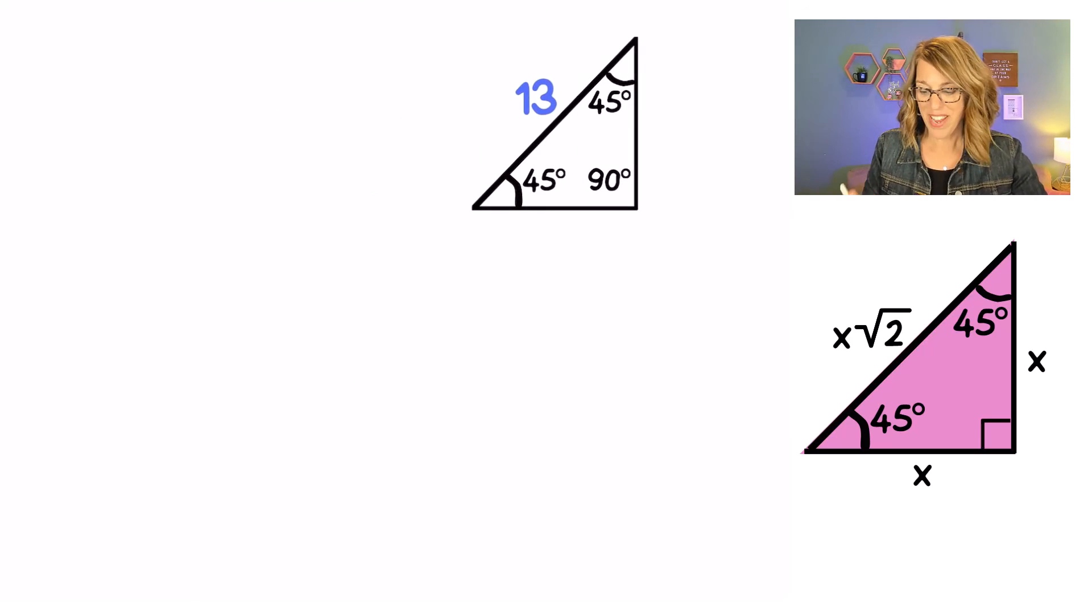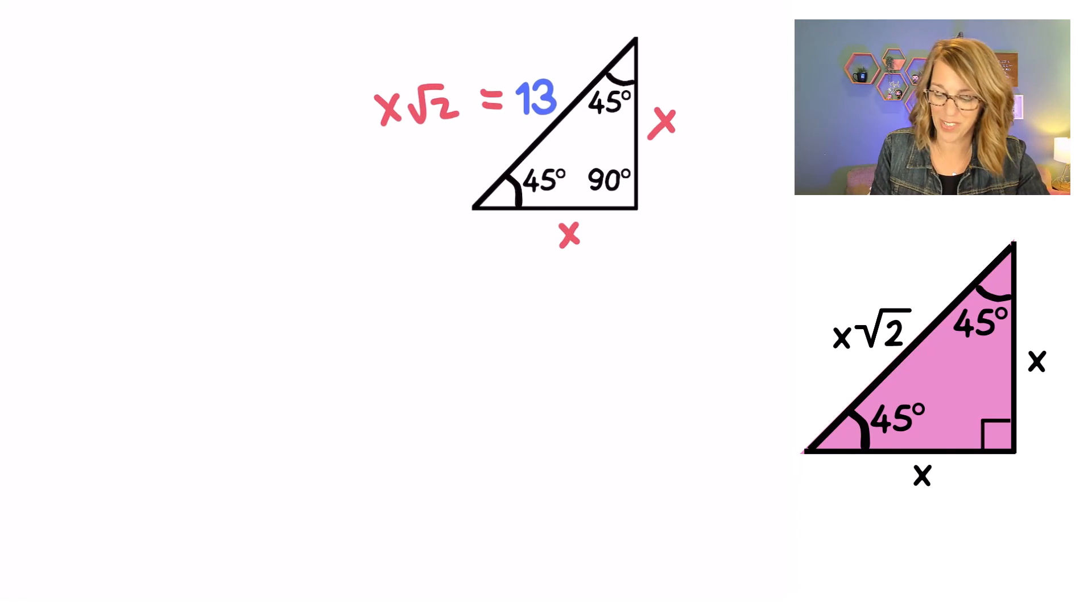In this one, I've got my hypotenuse 13. And that hypotenuse, I know because of our template, is going to be my X radical 2. If I can solve for X, I've got my other two sides. So over here, I've got X radical 2 is equal to my hypotenuse, which is 13.